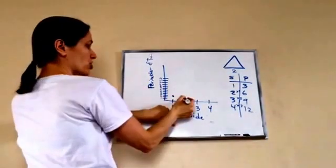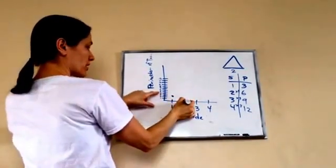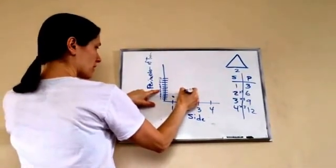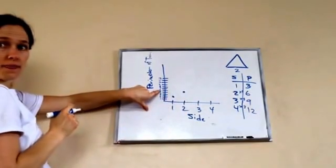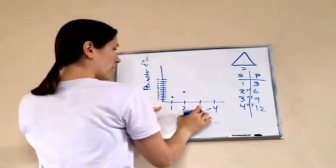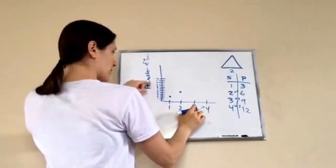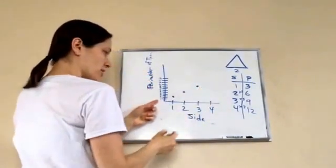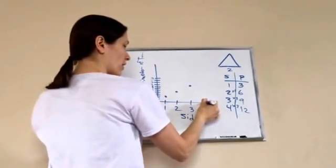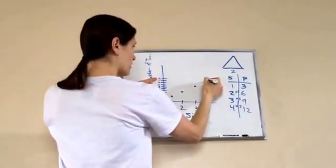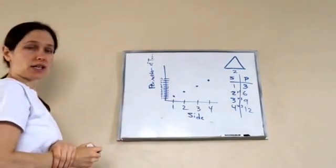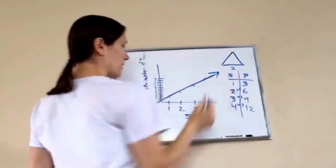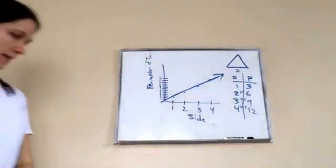When my side was 2, my perimeter was 6 — so over 2 and up 6. Side 3, perimeter 9. Side 4, perimeter 12. And as you can see, what's happening again? My line. Got it?